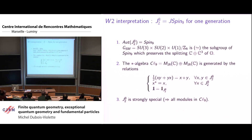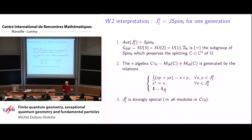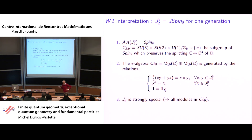Majorana spinors are particles equal to their antiparticles, so they carry no charge, which means there is no spoilation of the cancellation of anomalies of the standard model — something absolutely necessary to have a consistent quantum field theory of gauge theories. Now let me pass to the other interpretation: the two-by-two Hermitian octonionic matrix already contains one family of the model. To see that, look at the subgroup.